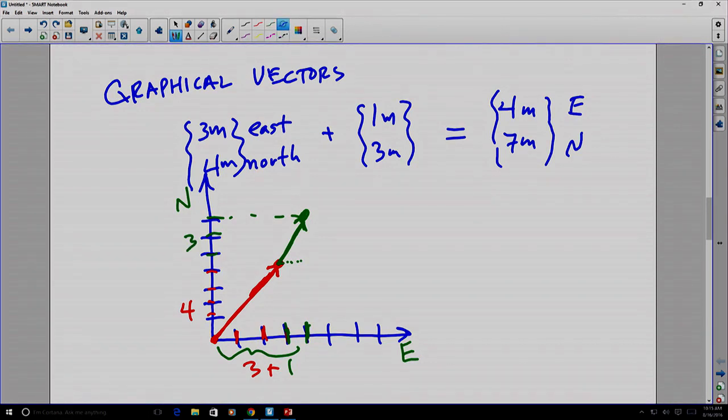And if I add those together, I get the 4, let's do this in purple, 1, 2, 3, 4, plus the 7, 1, 2, 3, 4, 5, 6, 7. And there's the vector representation of the sum of those two.